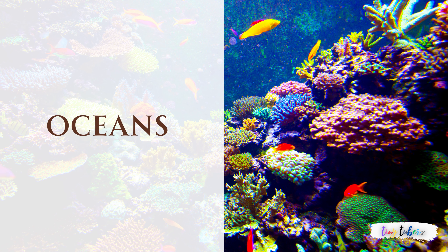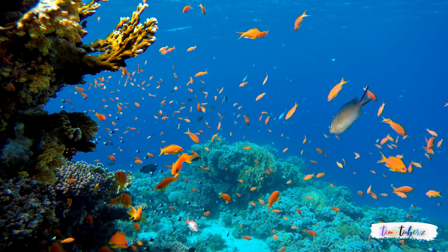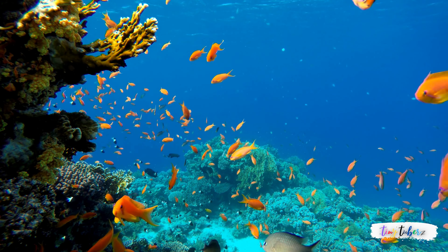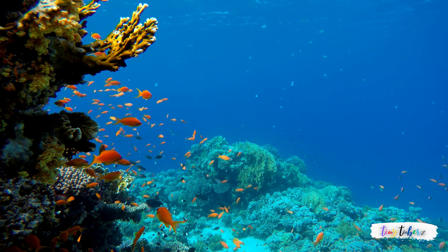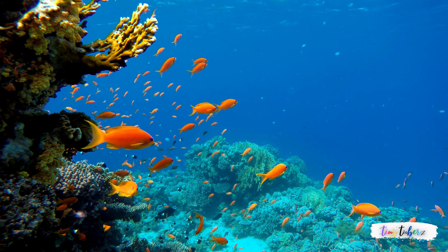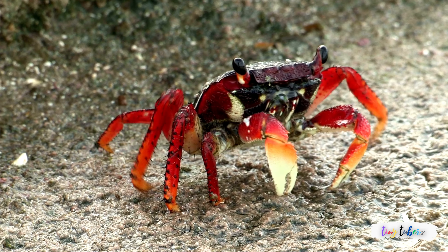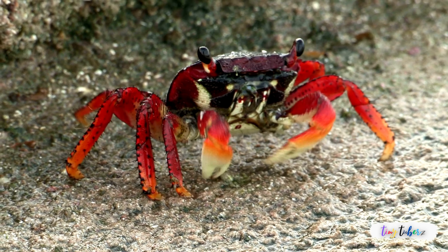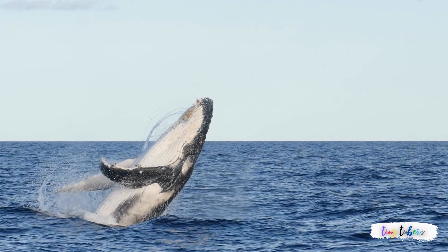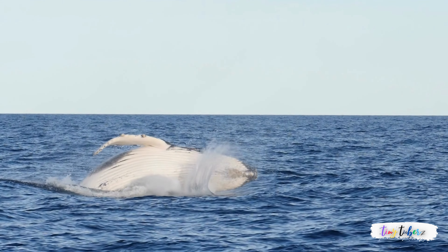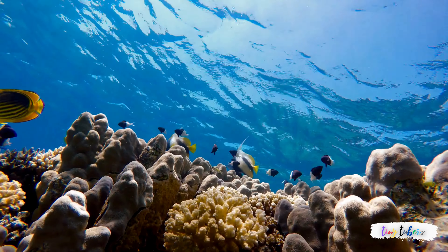Oceans. Oceans are vast bodies of salt water that cover most of the Earth's surface. They are home to an incredible diversity of marine life like kelp, seaweed, fish, sea turtles, crustaceans, dolphins, whales, sharks, and corals.